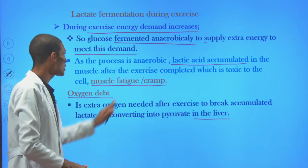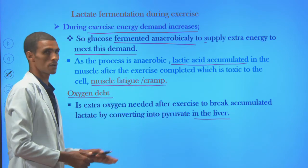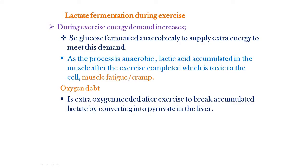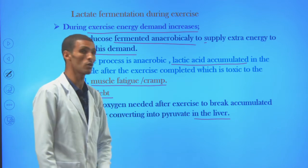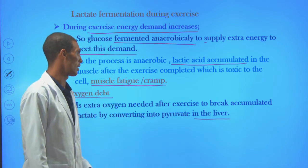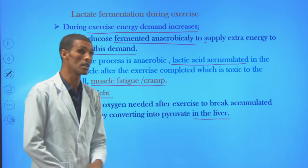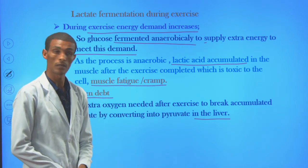The cell needs oxygen to break down the accumulated lactic acid. As a result of the oxygen shortage, lactic acid accumulates. By having extra oxygen — oxygen debt — it is important to break down the accumulated lactic acid into pyruvate, which can restart the original glycolysis pathway by being transported into the liver.